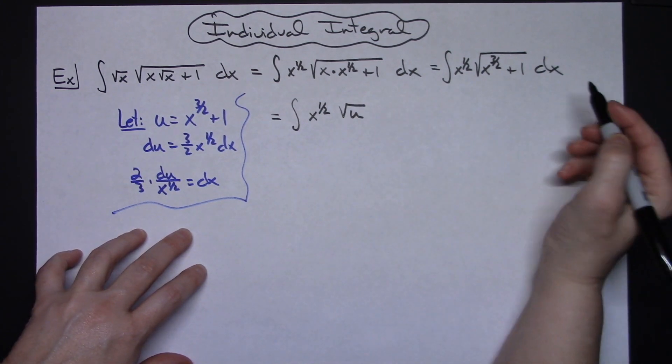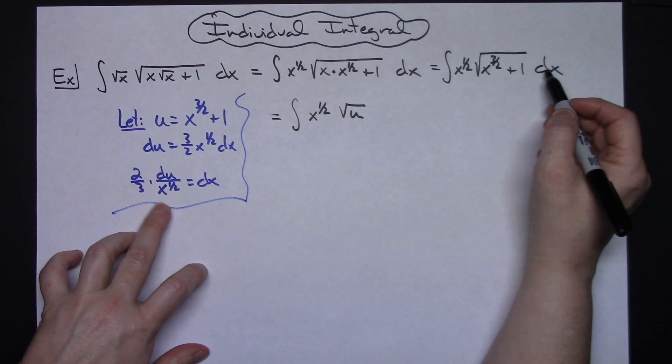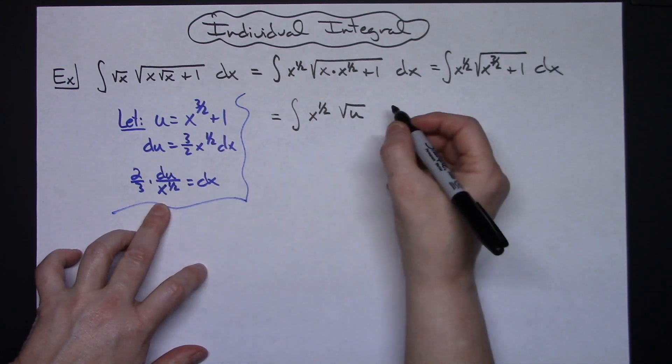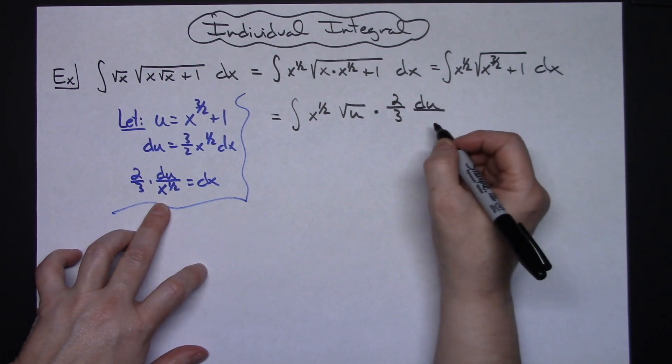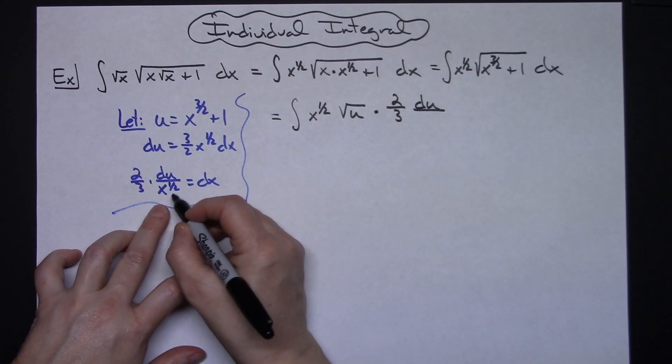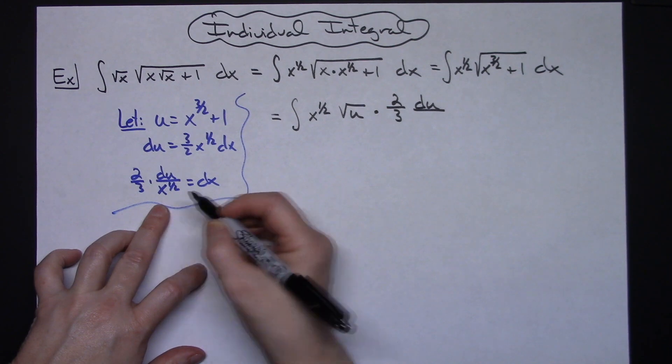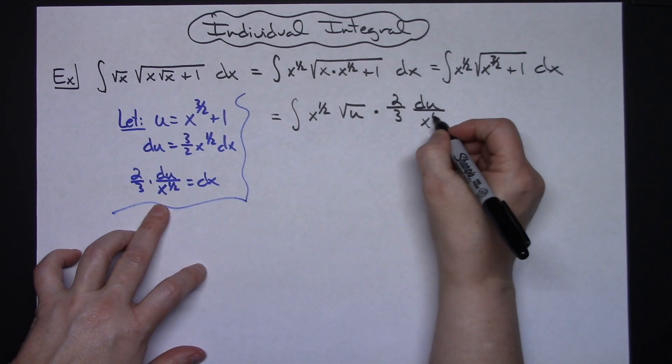And replace that dx with what I said it was over here. So then times a 2 thirds du over and I'm going to go ahead and leave that just like that so I've got an x to the 1 half.